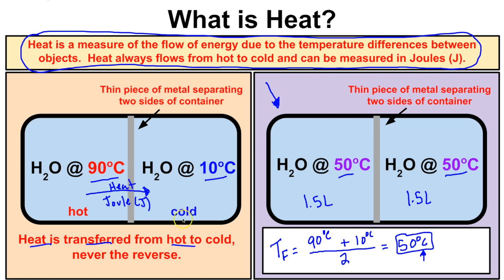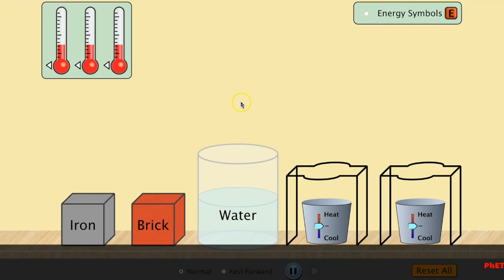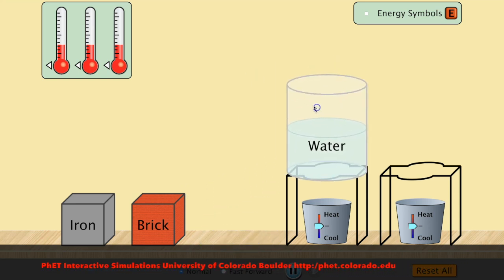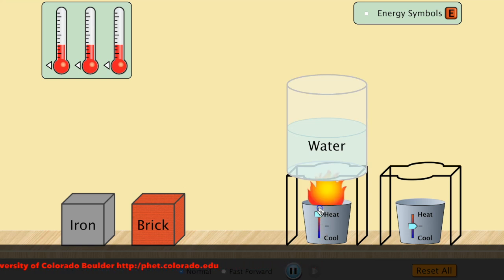So to summarize: temperature is a measure of the average kinetic energy of the particles in a substance, and heat is a measure of the flow of energy due to temperature differences. Now let's look at a PhET simulation that illustrates heat transfer. We'll place water on a heat source and heat it up to a pretty warm temperature.